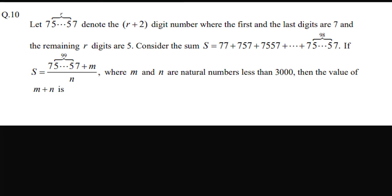Now here the question is, we are given a number which is of the form 7, 5, 5, 5, 7 and here we have total R fives and then we have these two numbers, sevens. So basically it is R plus 2 digit number. So first and last digit are 7 and remaining digits are 5.